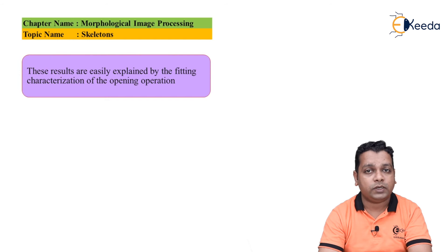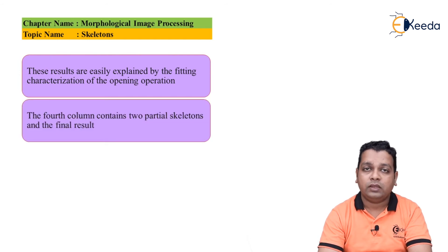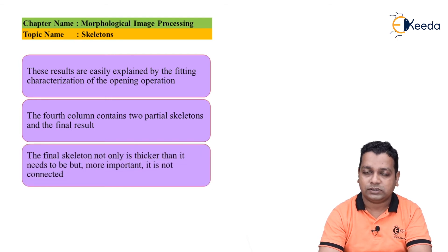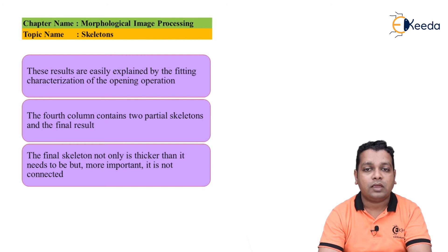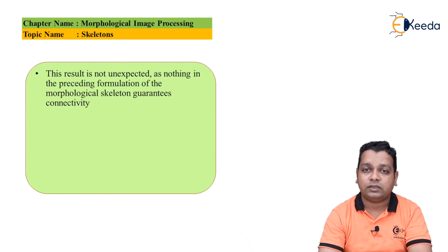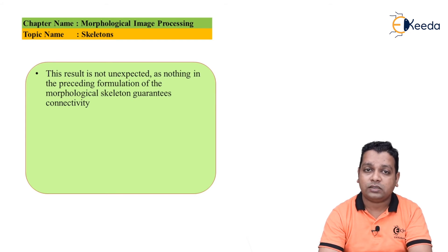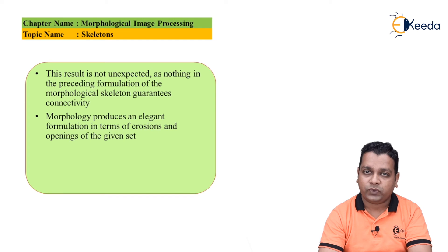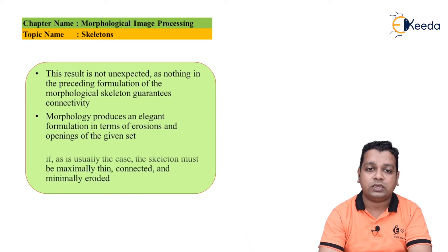The fourth column contains the two partial skeletons and the final result. The final skeleton is not only thicker than it needs to be, but more importantly it is not connected. This result is not unexpected, as nothing in the preceding formulation of the morphological skeleton guarantees the connectivity of regions. Morphologically we have an elegant formulation in terms of erosion and opening for the given set.